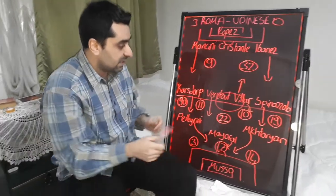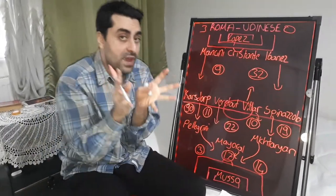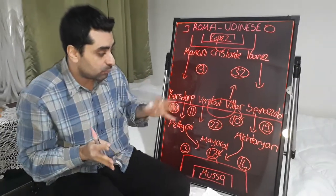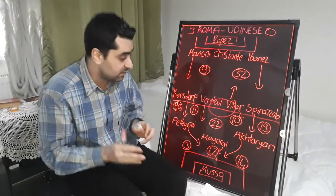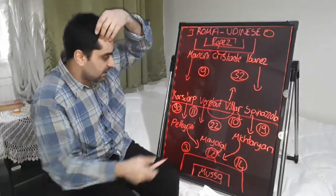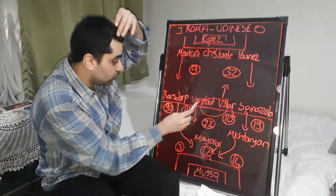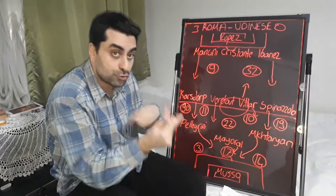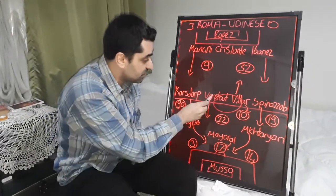Pellegrini and Mkhitaryan are very fast players and came forward together. Every time Werotut got into the penalty area and searched for goal positions.